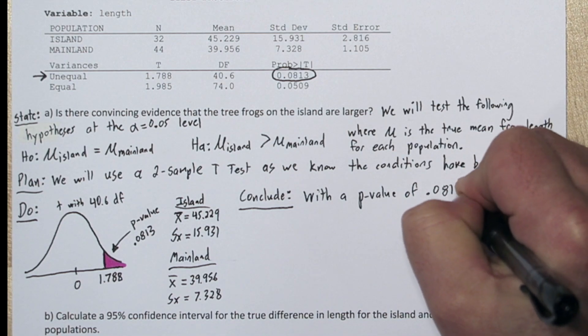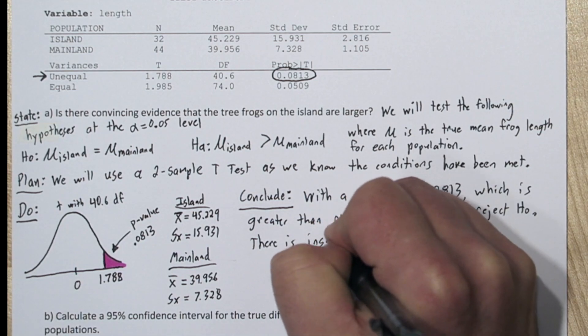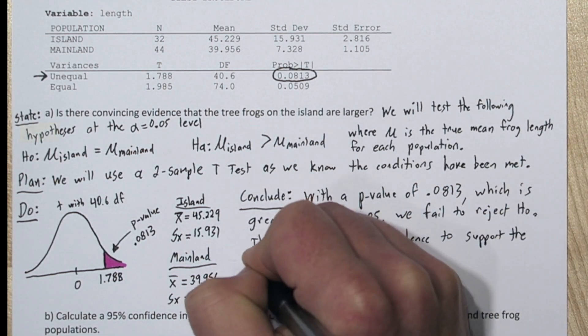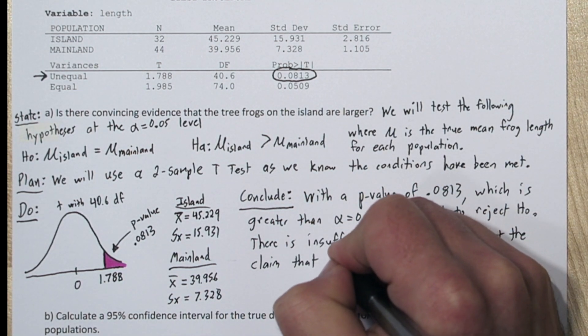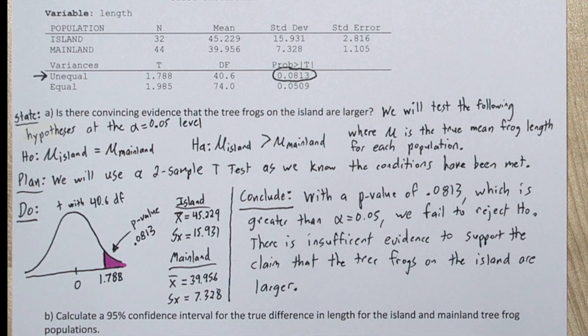So let's conclude. With a p-value of 0.0813, which is greater than alpha equals 0.05, we fail to reject the null hypothesis. There is insufficient evidence to support the claim that the tree frogs on the island are larger.